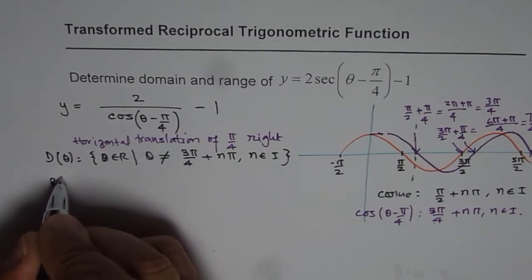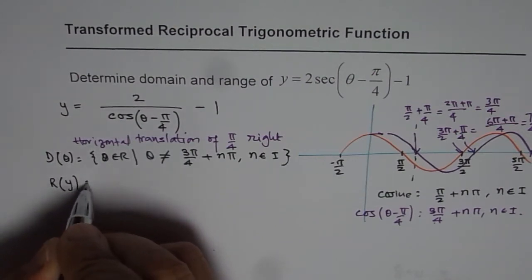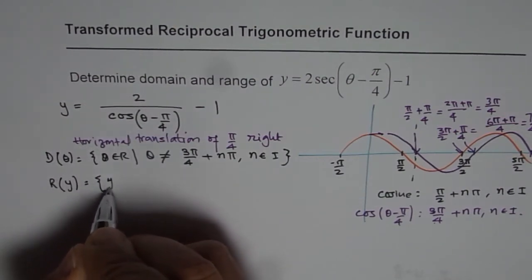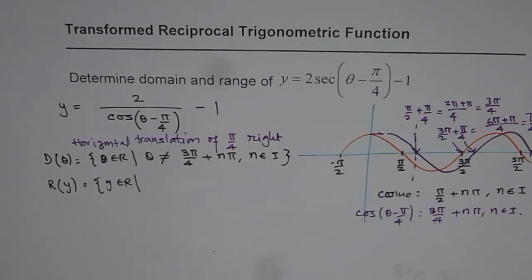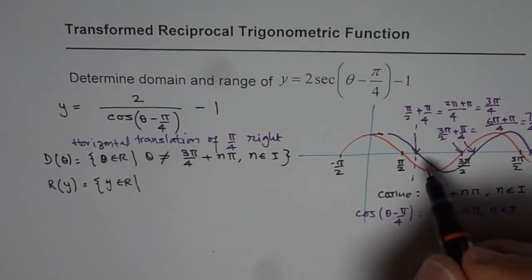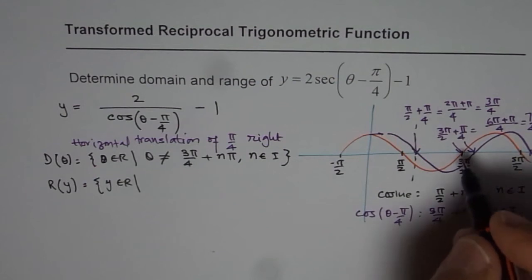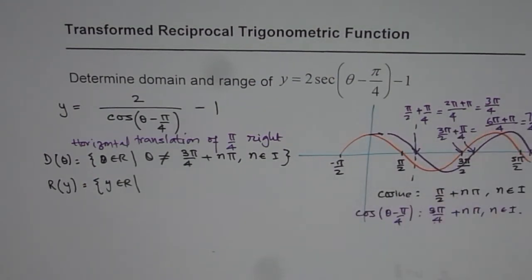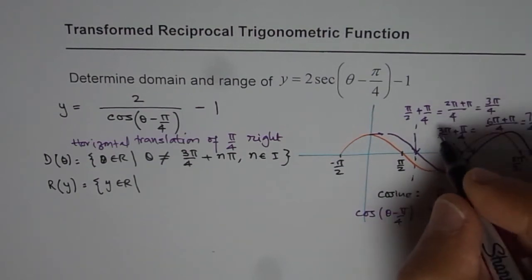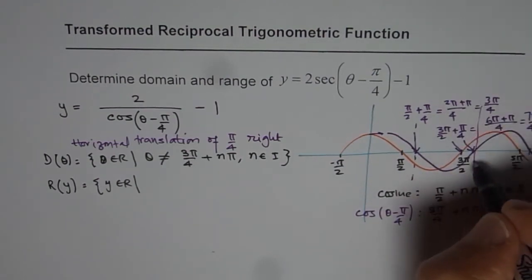Now let's look into the range of the function. So what is going to be the range? We know y belongs to real numbers, but then what is the condition? Now you can see that for a secant function, secant is reciprocal of this, so we have vertical asymptotes right there as shown here. These are the vertical asymptotes shifted to 3 pi by 4 multiples.